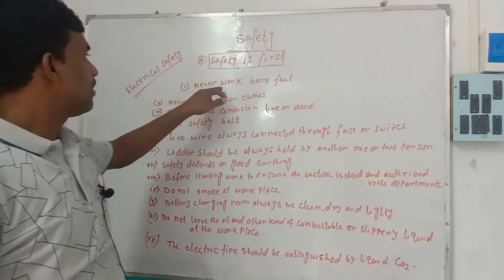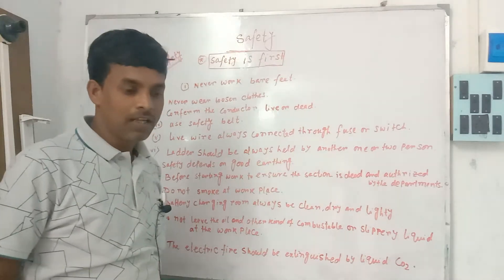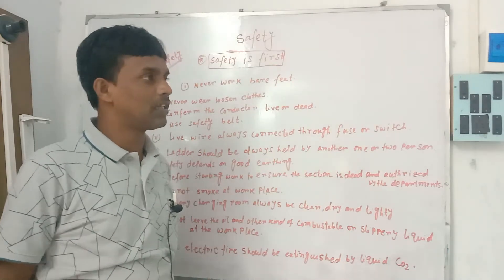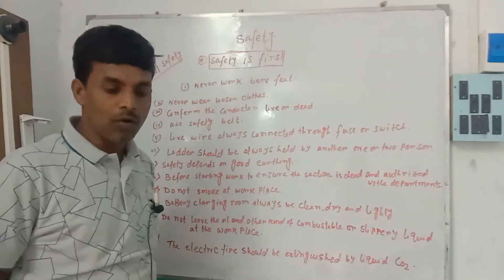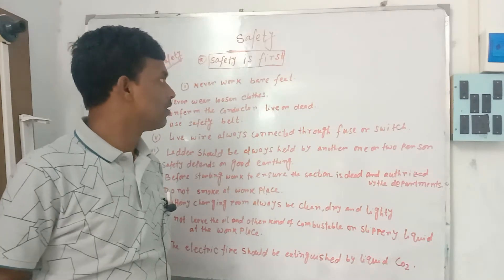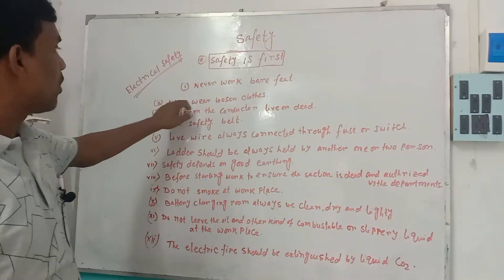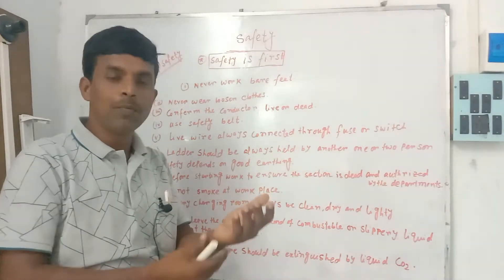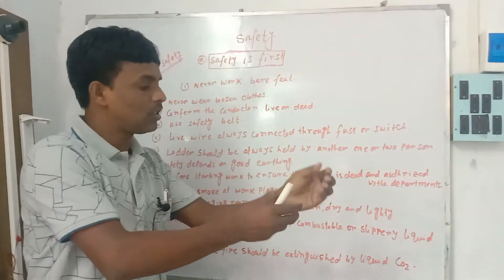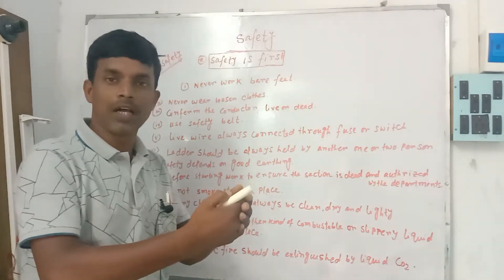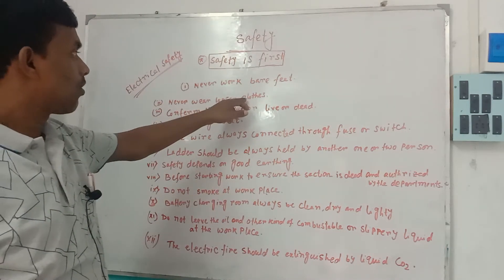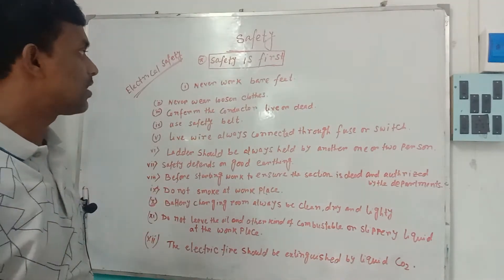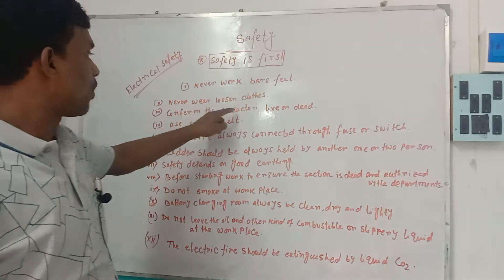First, we are going to go to the network — bare feet. That means we are working on electrical and working on a border — the electrical and the field. The bare feet are working on the network. We are working on the safety. An important thing is to apply the solution. We are working on electronic clothes, metal, and electric connections. Confirm that the conductor is alive or dead.